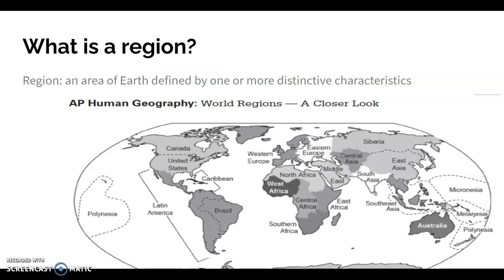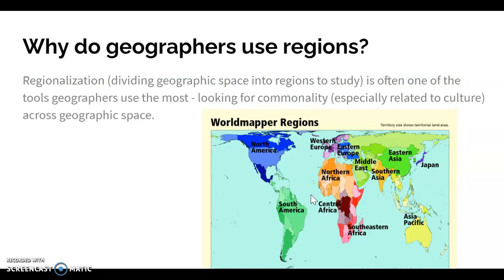Why do geographers use regions? Dividing geographic space into regions is a convenient and easy way to look for commonalities or similarities within a space — similarities related to culture, politics, or economic levels. Essentially, we're looking for things that make the study of particular places more easily accessible. Combining places into regions to study them has that effect.